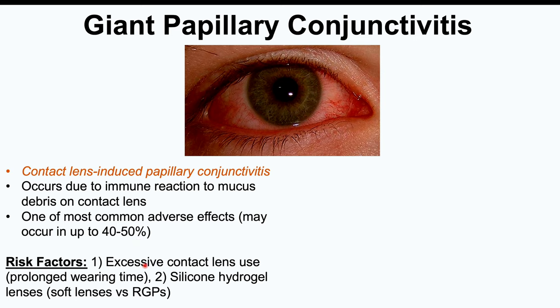Risk factors for giant papillary conjunctivitis include excessive contact lens use — wearing contact lenses for prolonged periods of time before changing and cleaning the lens, or using older expired lenses. Certain lenses can also increase the risk, including silicone hydrogel lenses. It is more likely to occur with soft lenses versus rigid gas permeable lenses.